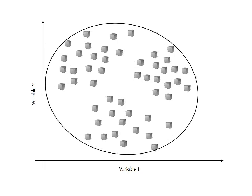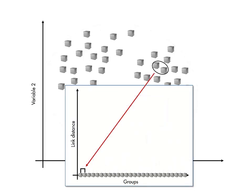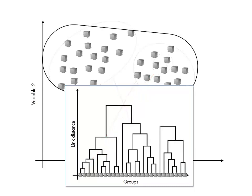This sequence of link information is most easily digested visually, using a dendrogram. Each connection represents a link between a pair of groups, with the height of the horizontal bar representing the distance between the two groups it connects. Moving up, the dendrogram shows the full structure of the nested groups.